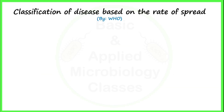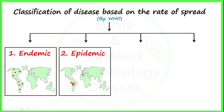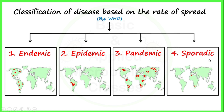According to WHO, that is the World Health Organization, we can classify disease on the basis of their rate of spread into four different types. Four different terms are used to describe a disease depending on the rate of its spread. The first one is endemic, second is epidemic, third is pandemic, and the fourth one is sporadic. Now we will try to understand each of these types one by one.